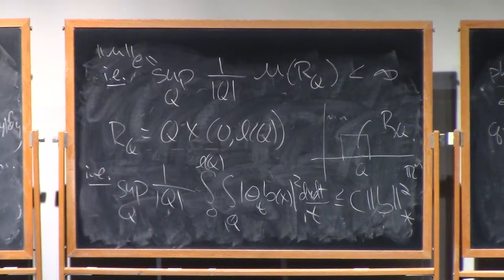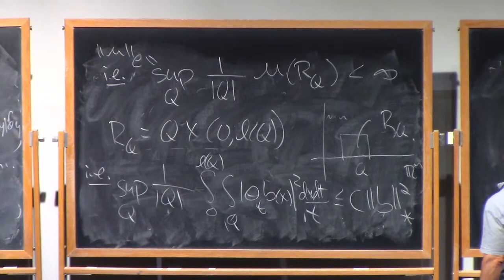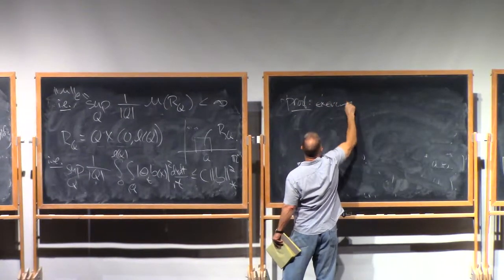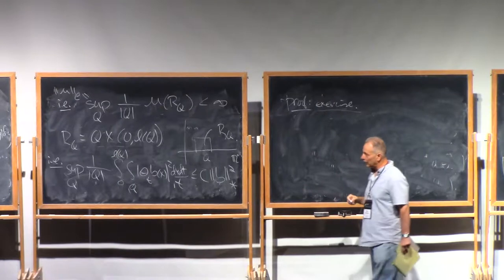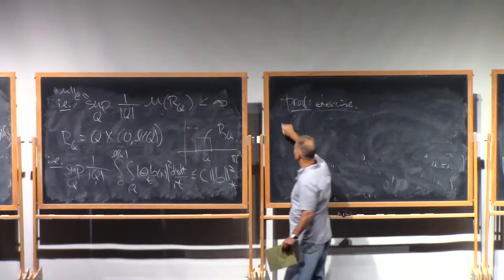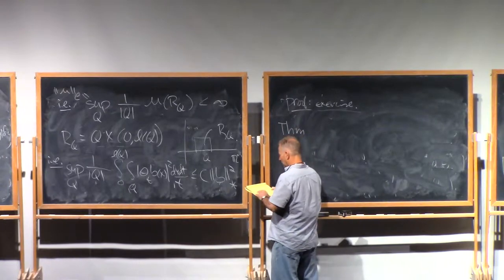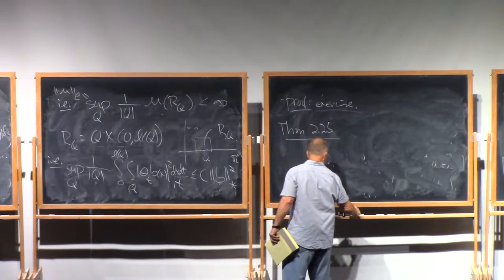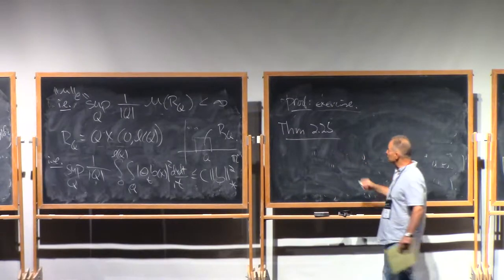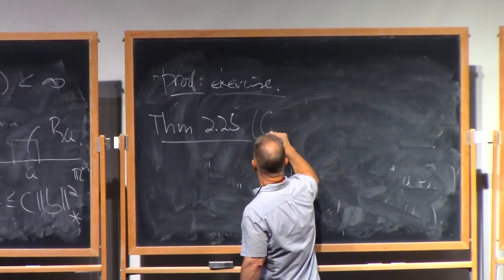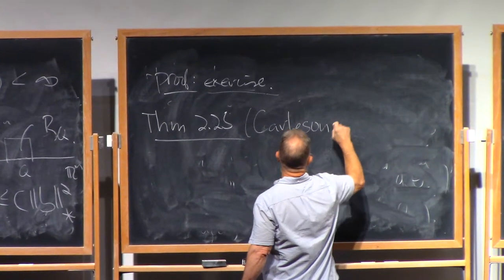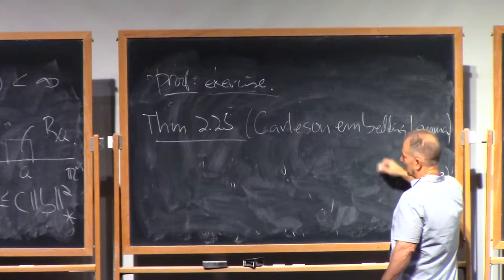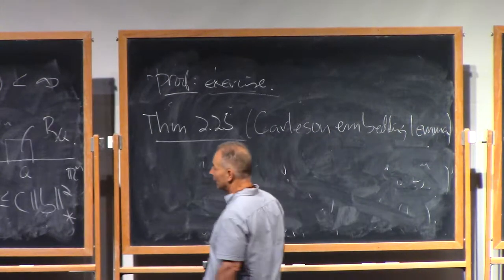All right. So the proof of this is an exercise. And now there's one other thing that I'm gonna mention without proof and just give you a reference. Theorem. How am I calling it? 225 in the notes. This is one of the fundamental facts about Carleson Measures. This is the so-called Carleson Embedding Theorem or Embedding Lemma, I should say. Again, I don't know why I call it a theorem. It should be a lemma, but it says the following thing.